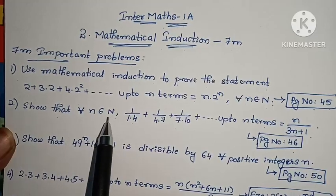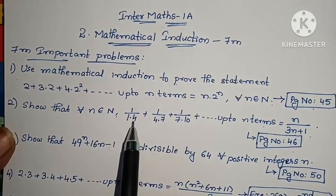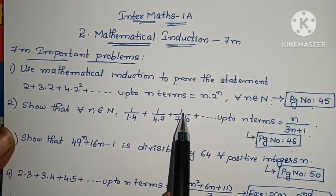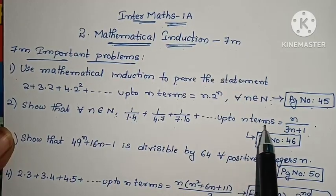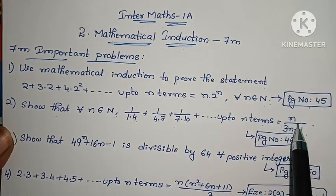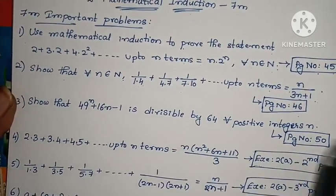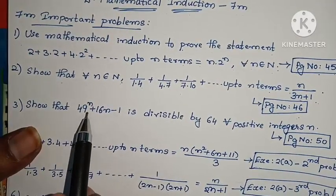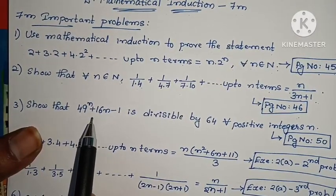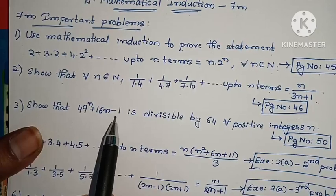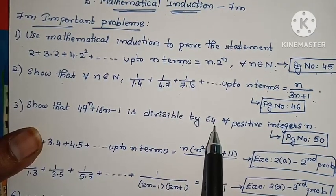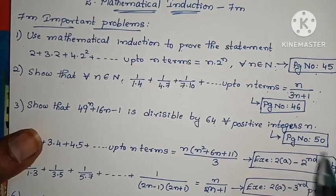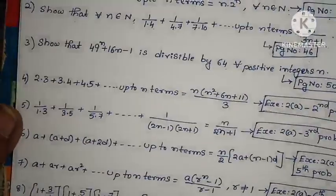Second problem: show that for all n belonging to N, 1 by (1 into 4) plus 1 by (4 into 7) plus 1 by (7 into 10) up to n terms equals n by (3n plus 1). Page number 46. Third problem: show that 49 to the power n plus 16n minus 1 is divisible by 64, for all positive integers n. Page number 50.